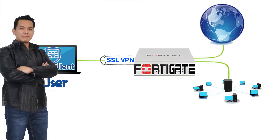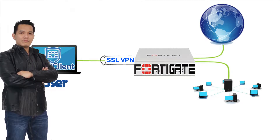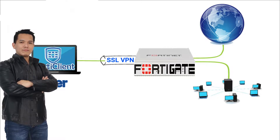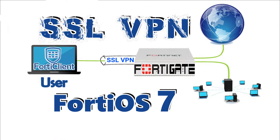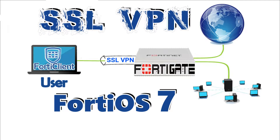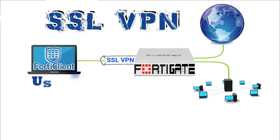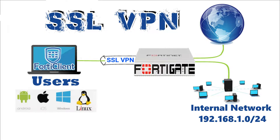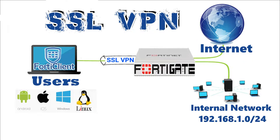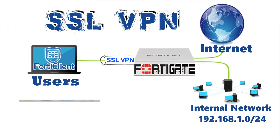Hi guys, this is D-Igurotech. Today we are going to configure SSL VPN on FortiGate 40 OS version 7. SSL VPN will allow remote users to connect to the FortiGate device to access the internal network using FortiClient for Android, iOS, Windows, and even some Linux operating systems. Internet traffic can also flow to the FortiGate for security scanning.